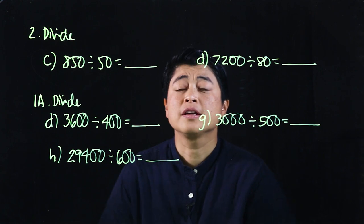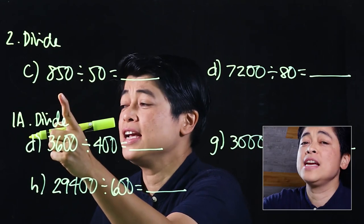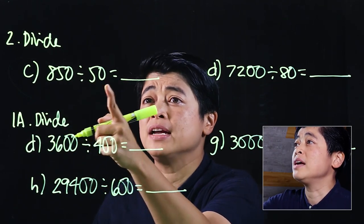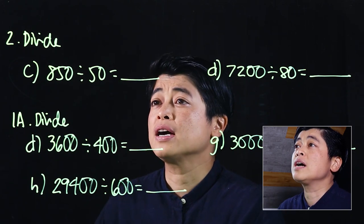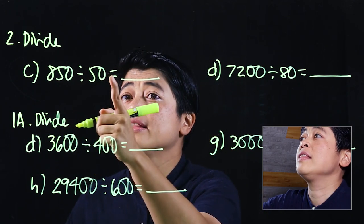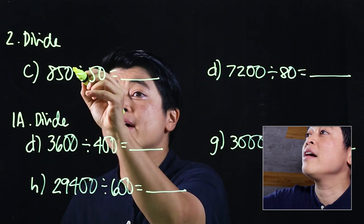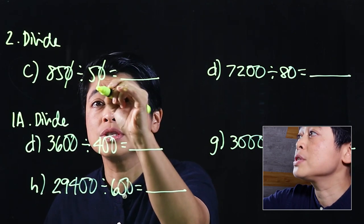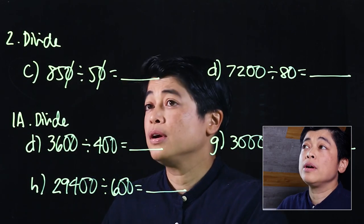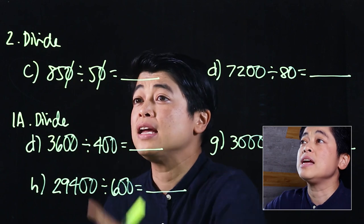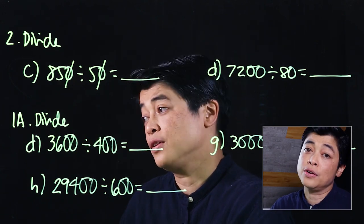The first exercise is 850 divided by 50. If we look at the dividend and the divisor, both have one zero, so those can be canceled. Now if you can divide mentally, 85 divided by 5, great, but if you can't, then you have no choice but to put it on the side and divide.